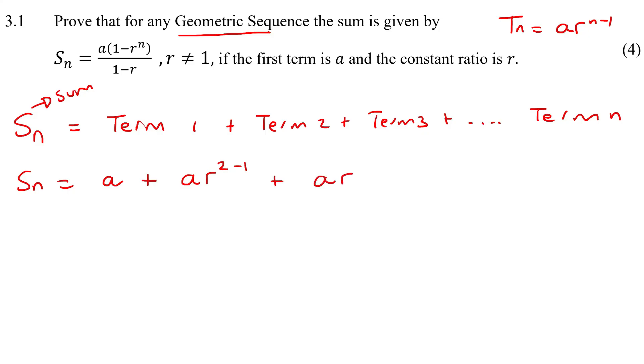Term three would just be ar to the three minus one and term n would be ar to the n minus one.